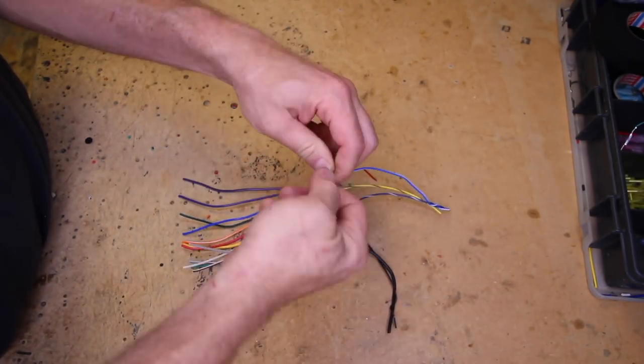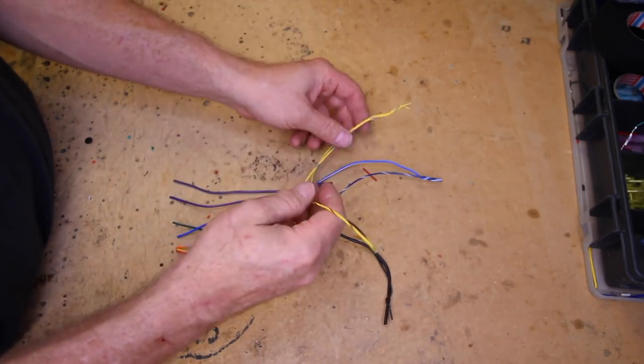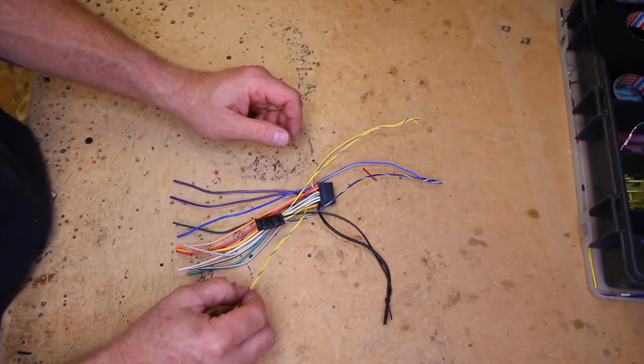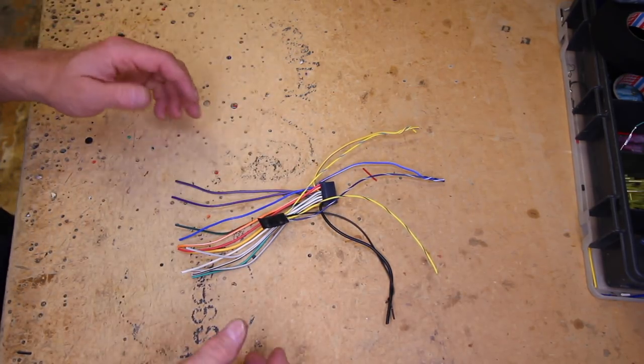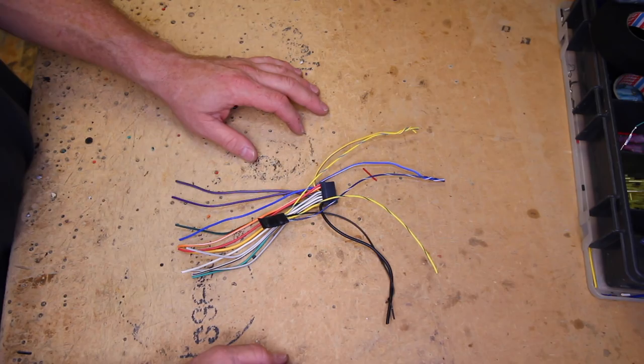Now in this case it's a new Alpine so it doesn't have that yellow black wire, so all we want to do is just cap that off and we're done. If you have the yellow black, you'd hook that up. And that's it. It's that easy and you'll get video in motion and be able to access all your menus.